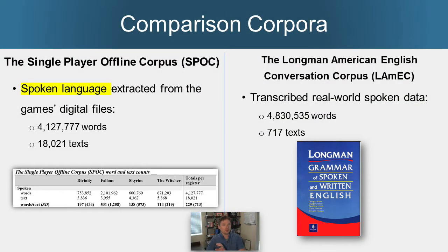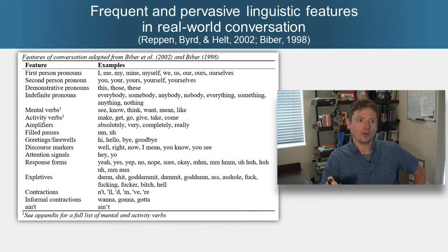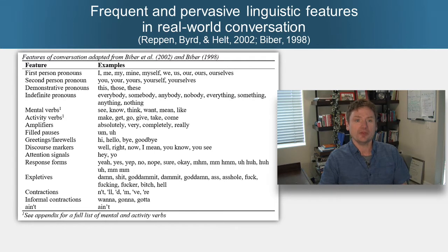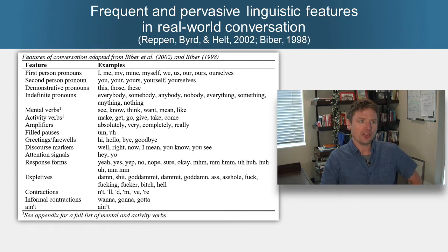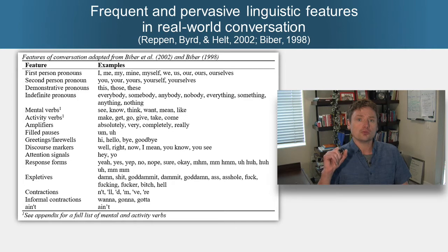In order to compare to real world spoken language, we need a comparison corpus. For this project, I used the Longman American Conversation Corpus, or LAMEC. I'm going to be talking about the spoken language in the game corpus in the linguistic analysis and saving the written part for another time. For the quantitative part, I compiled a list of features adapted from Biber et al. 2002 and Biber 1998 — features that are common and pervasive in normal everyday conversation based on analysis from the Longman grammar.